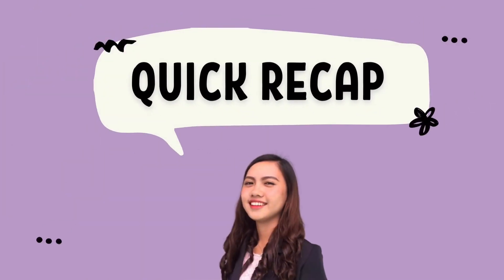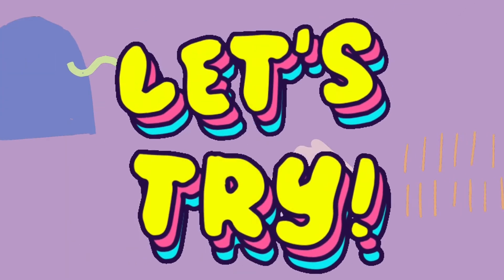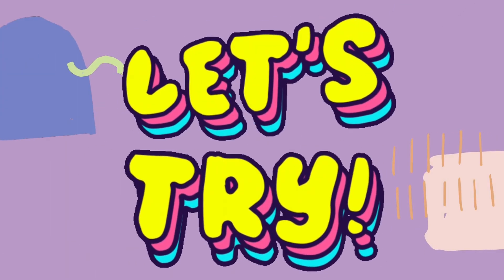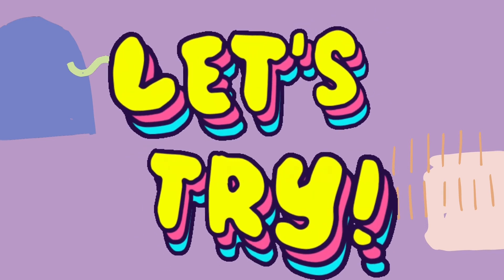That's it! Let's have a quick recap! In this video, we've discussed the lines of latitude and longitude which can be found on a globe, and how to locate places using the lines of latitude and longitude. Now, let's try answering a 5-item quiz about latitude and longitude. You have a minute to answer. Good luck!